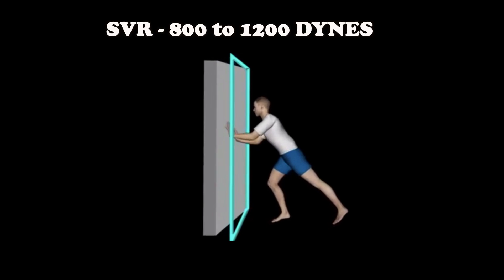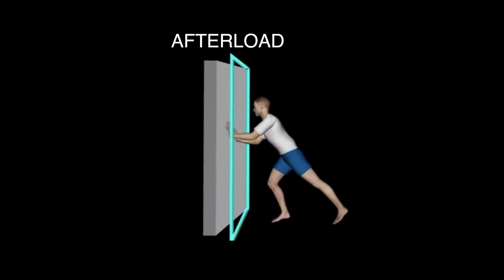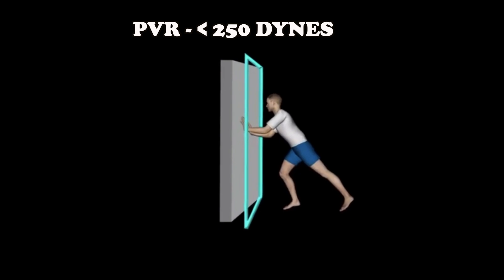Normal values are 800 to 1200 dynes. The pulmonary vascular resistance measures the afterload, or resistance of the right ventricle. Normal pulmonary vascular resistance values are less than 250 dynes.